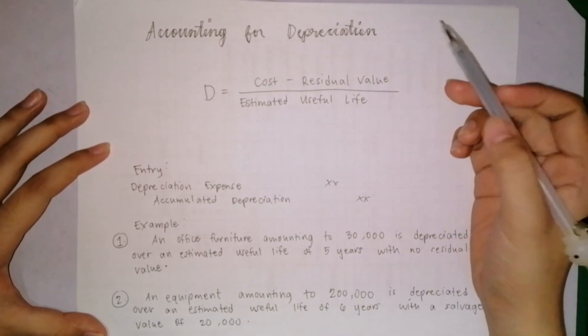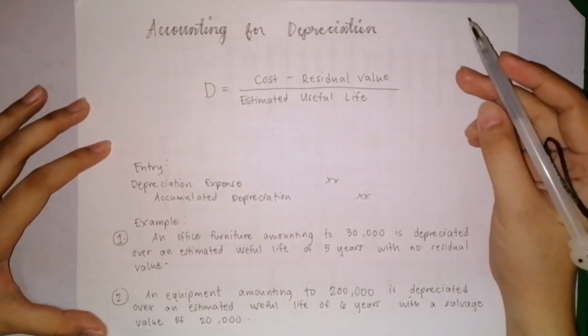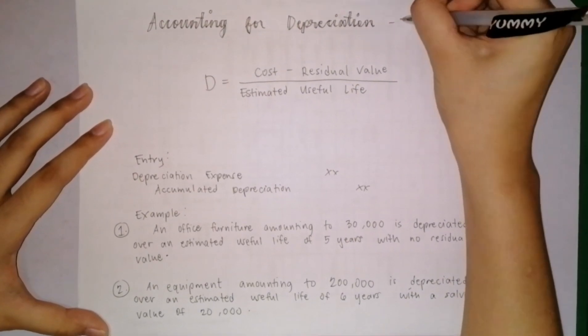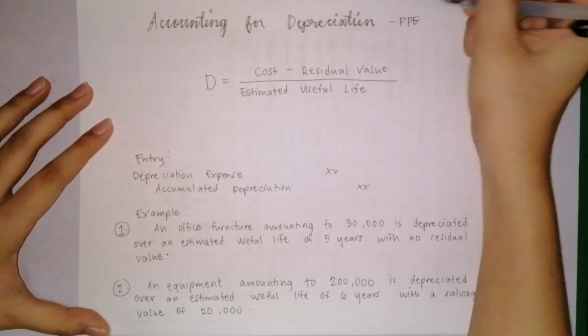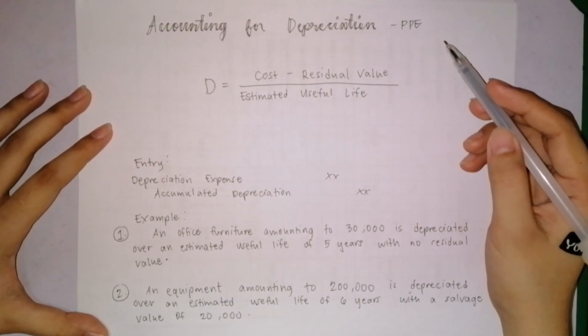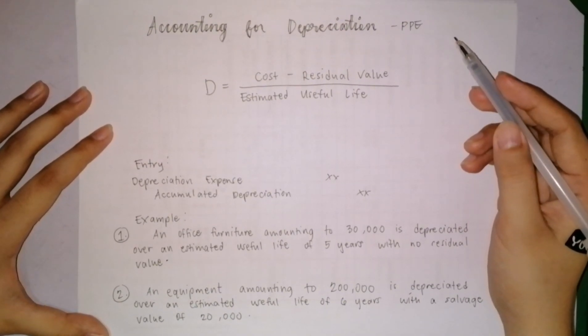In this video, we will be talking about accounting for depreciation. Depreciation is applicable to property, plant, and equipment. The benefit of property, plant, and equipment to the company is extended over a period of time.